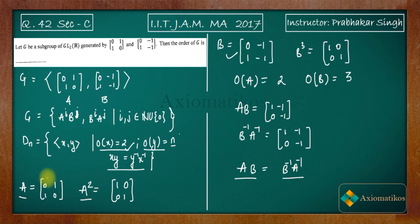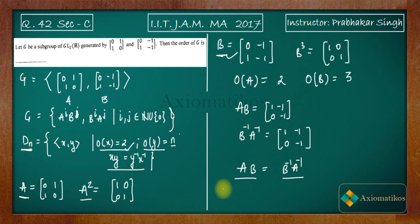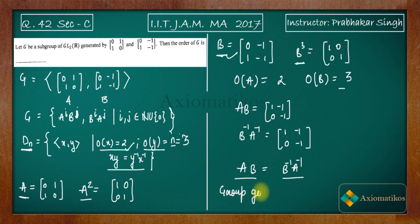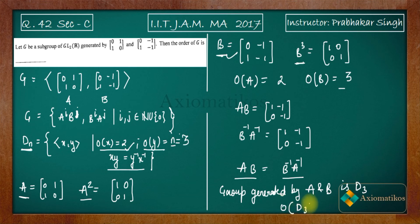Since AB = B⁻¹A⁻¹, these two elements satisfy the property of the elements in a dihedral group. That means A and B are going to generate a dihedral group of order 2n. Here n is the order of B, which is 3, so the group generated by A and B is D3. The order of D3 is 2×3 = 6. So the answer to this problem is 6.